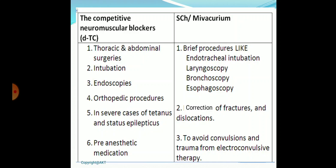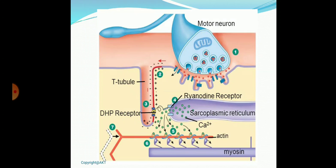Uses of neuromuscular blockers: competitive blockers are used for thoracic and abdominal surgeries, intubation procedures, endoscopies (mivacurium preferred), orthopedic procedures, severe cases of tetanus and status epilepticus, and as pre-anesthetic medication. Succinylcholine and mivacurium are short-acting drugs used for brief procedures such as endotracheal intubation, laryngoscopy, bronchoscopy, esophagoscopy, correction of fractures and dislocations, and to avoid convulsions or trauma associated with electroconvulsive therapy.